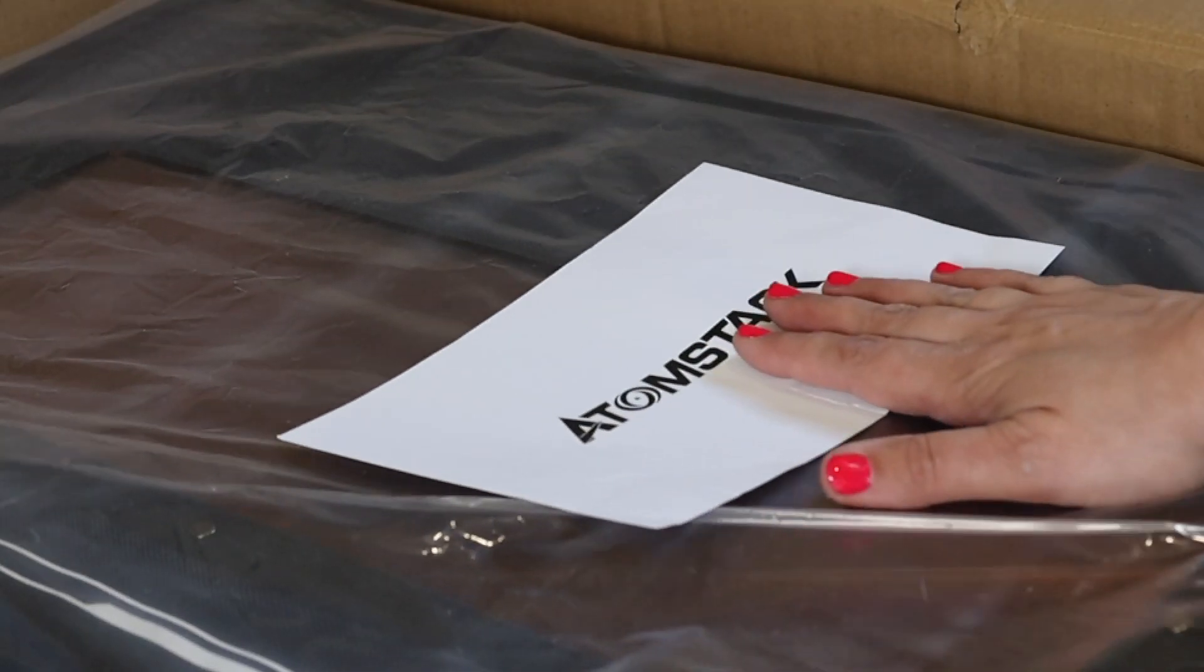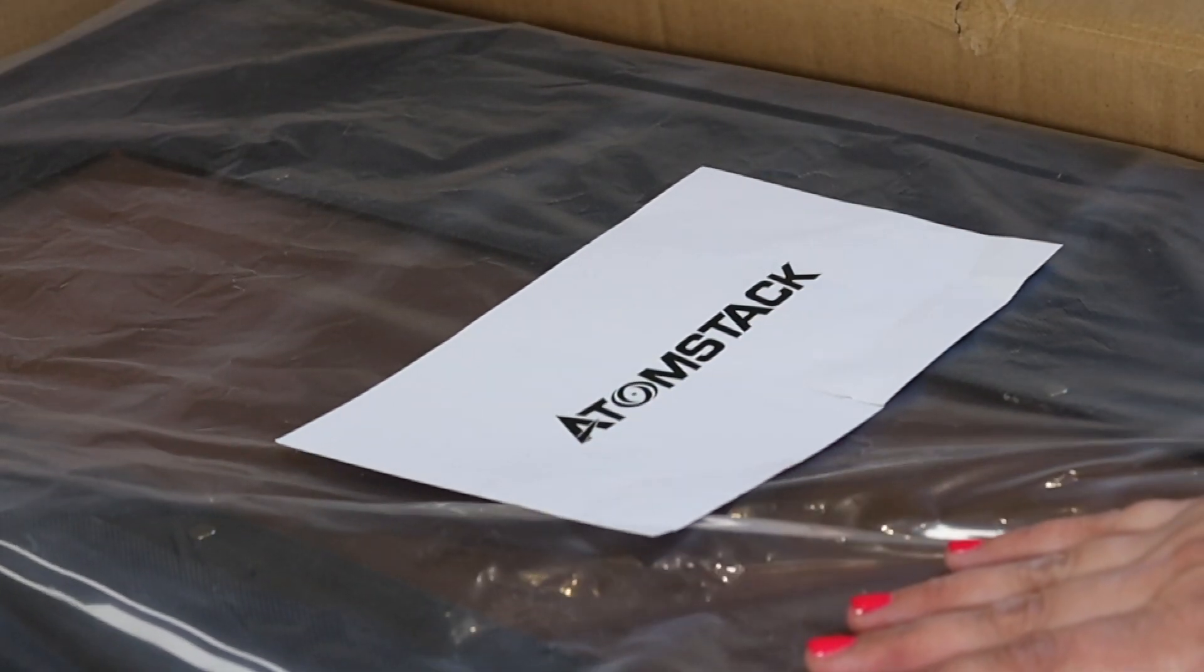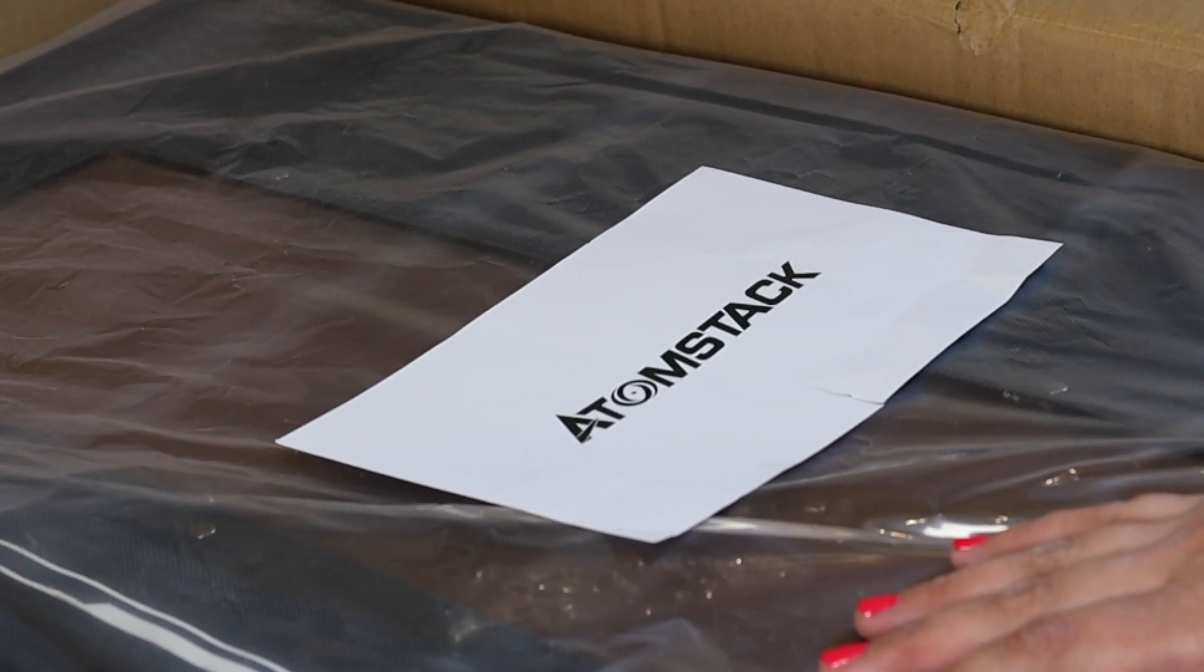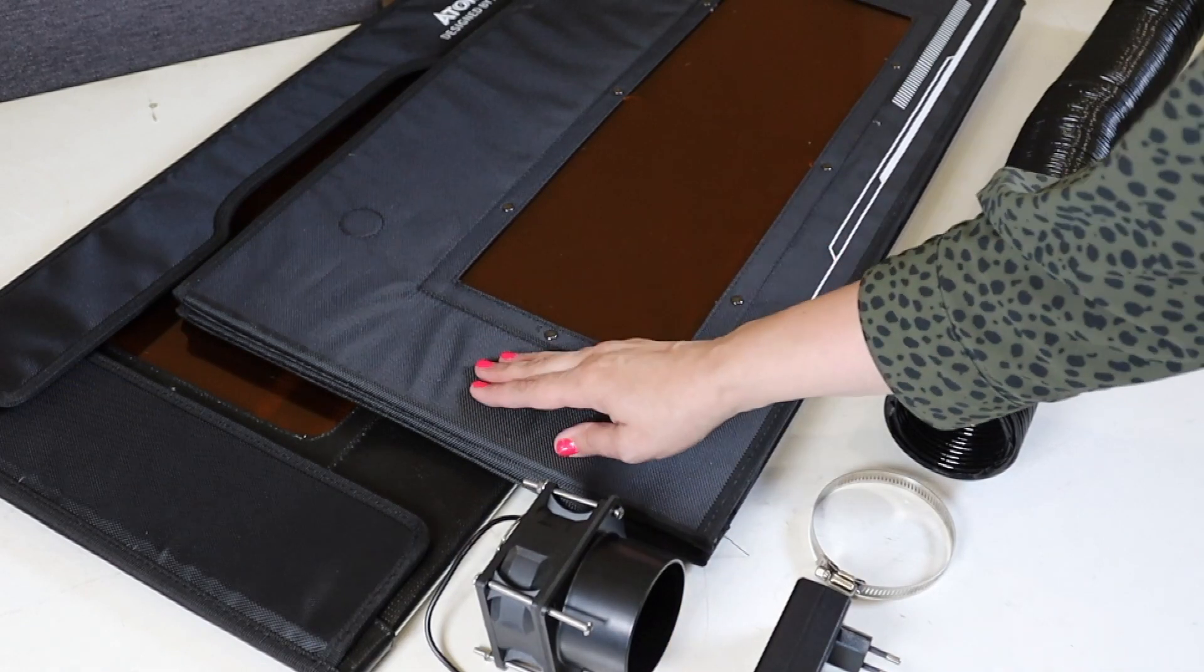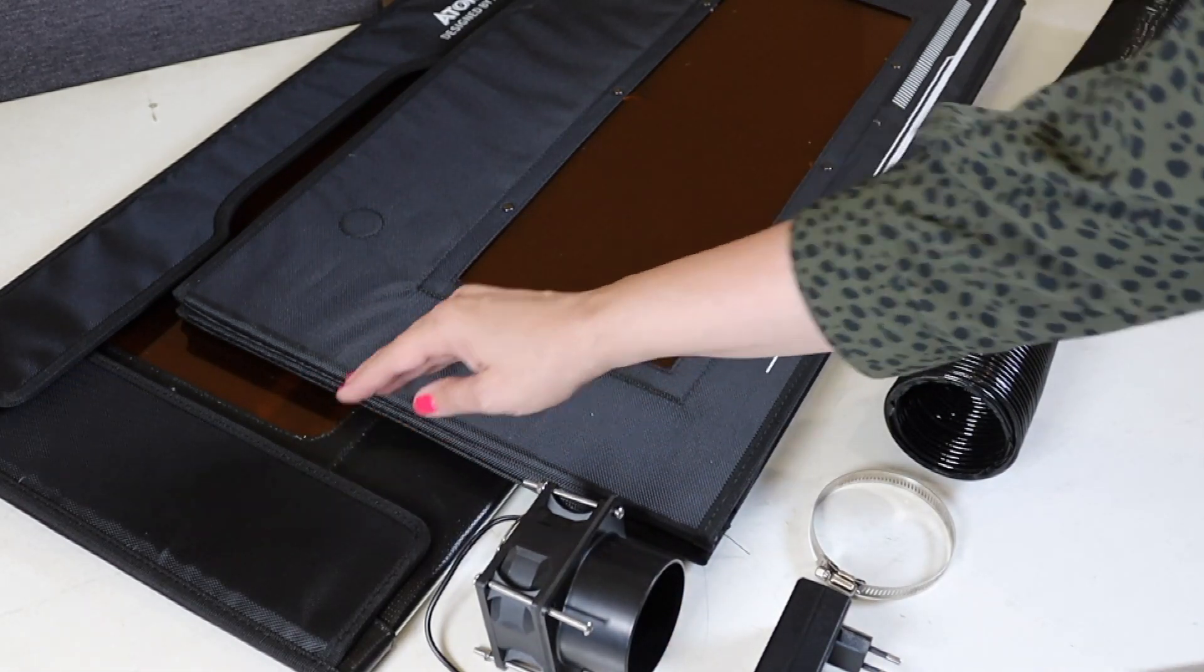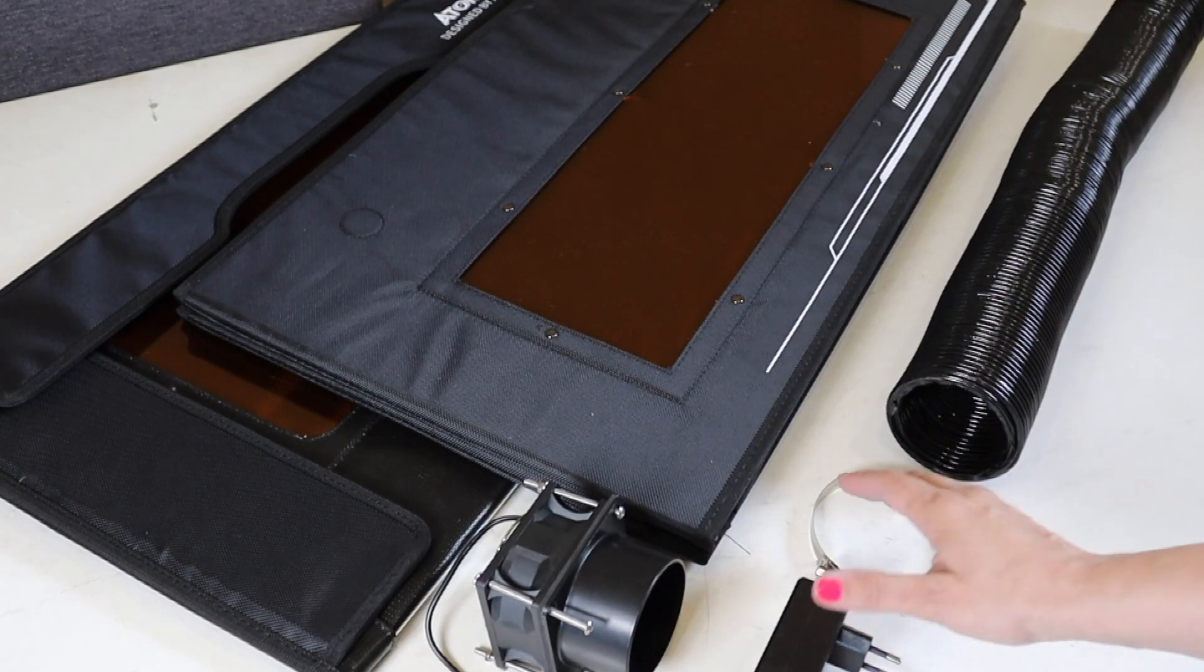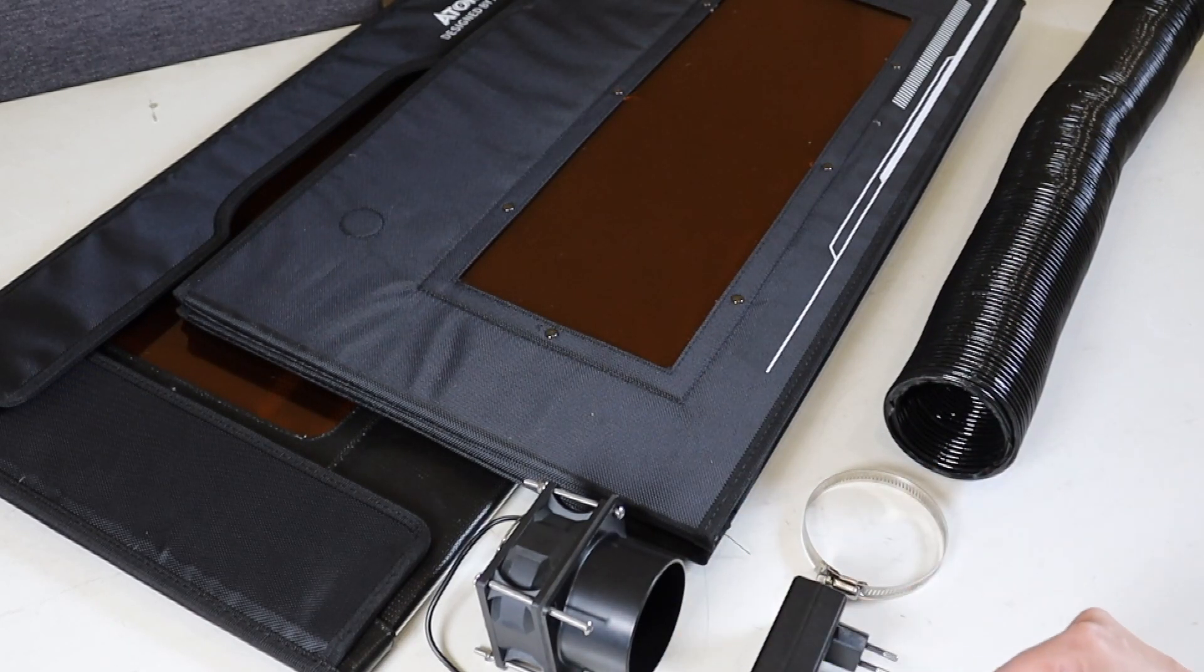So I am going to unwrap this and show you everything that comes with this box. And this is it - you have the protective cover that exists of two parts, an exhaust fan and an exhaust pipe, and of course everything you need to connect it with.